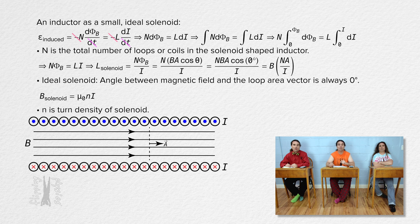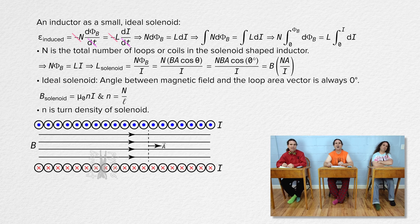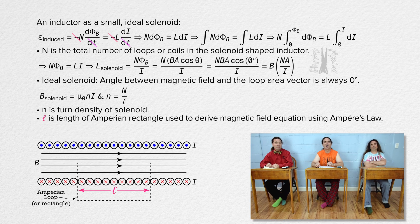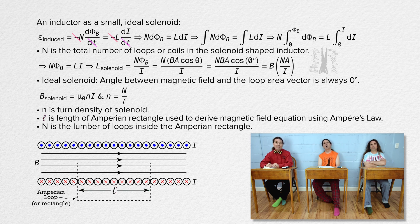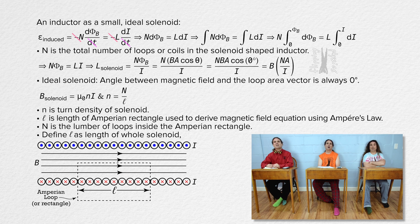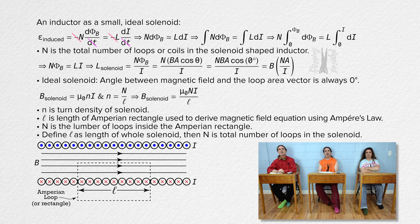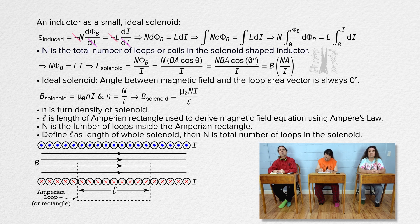And turn density equals uppercase N, the number of loops, divided by some sort of curly symbol. What's that? That is a curly L and it stands for the length of the amperian loop or rectangle we use to determine the magnetic field. And actually capital N is defined as the number of loops inside the amperian loop. If we make the size of the amperian rectangle cover the whole length of the solenoid, then capital N is the total number of loops in the solenoid, just like we defined capital N earlier. And curly L is the length of the whole ideal solenoid.